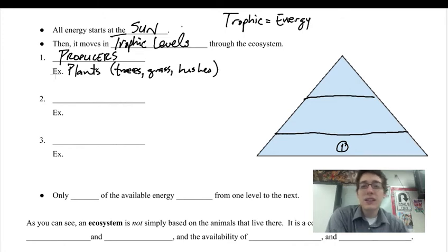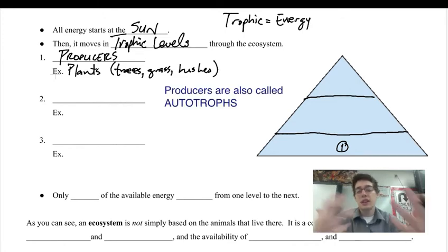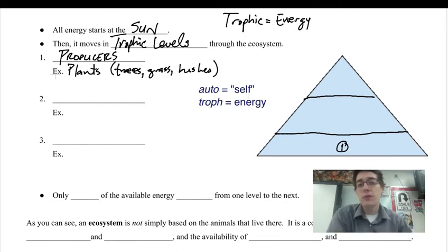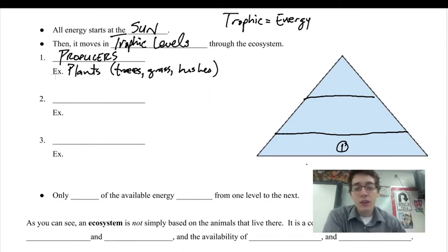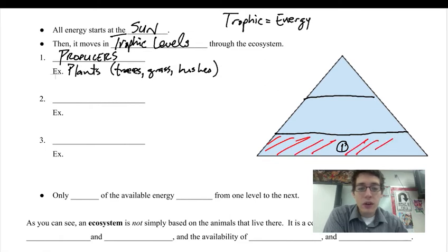Any sort of plant in an ecosystem is a producer because it can take that sun's energy and produce its own energy. It can produce its own food from that. And now notice that this is the largest area of this trophic level pyramid. So this shaded in red area are the producers.